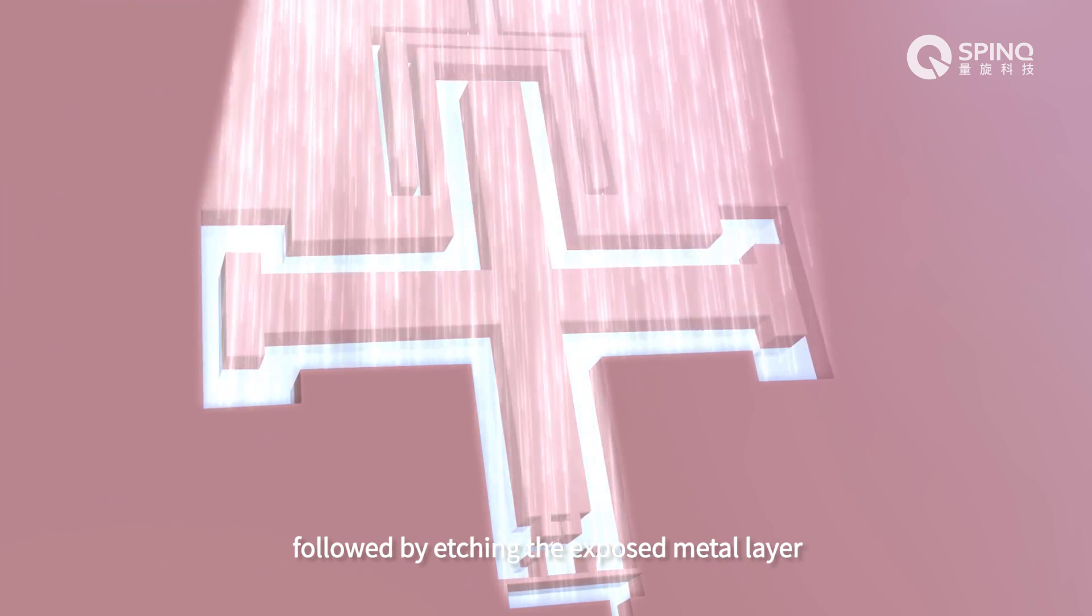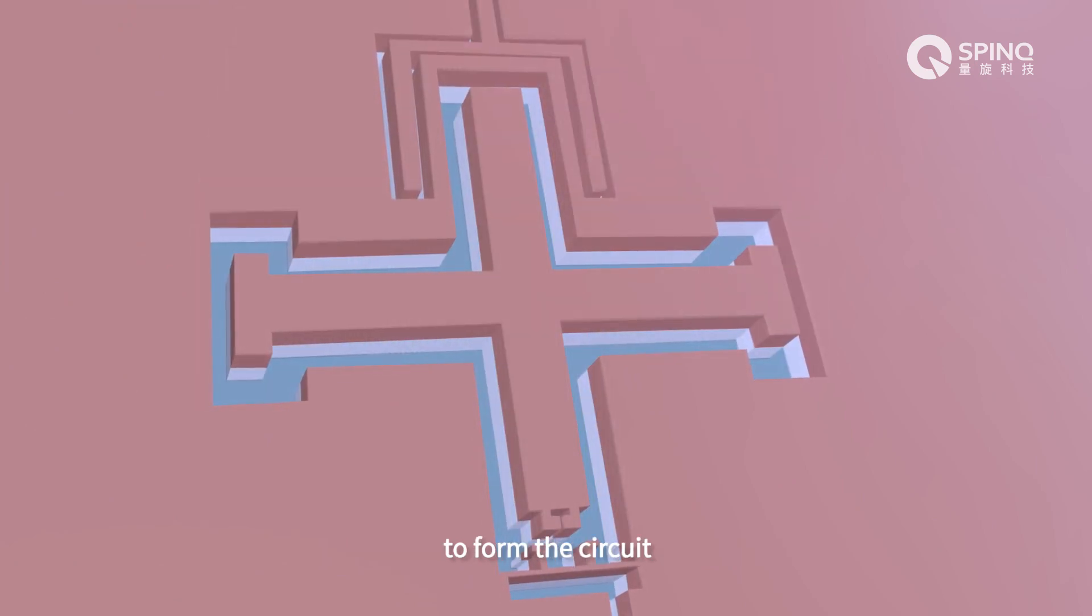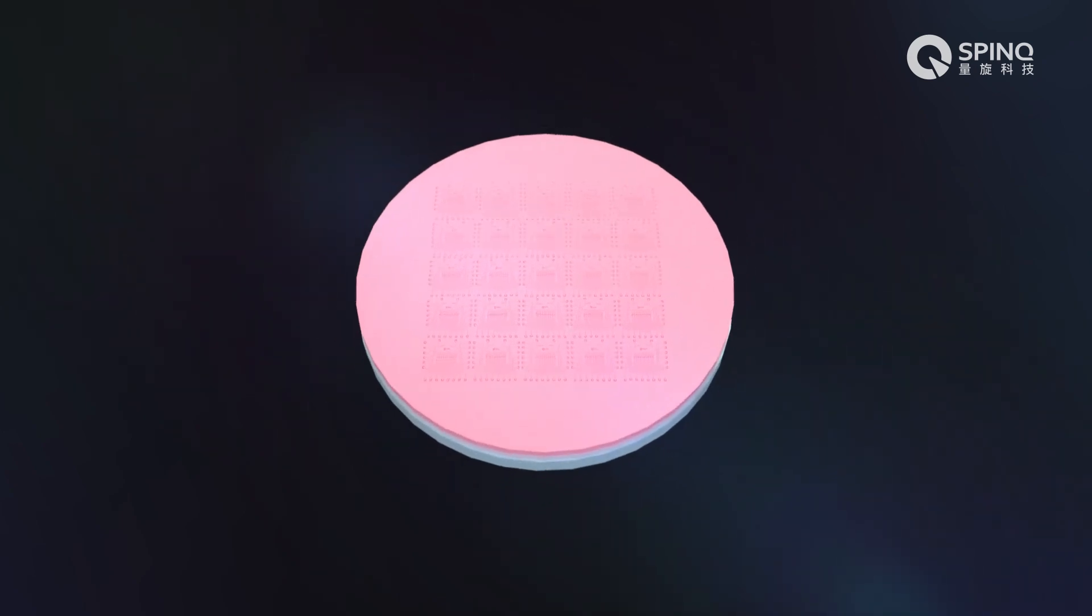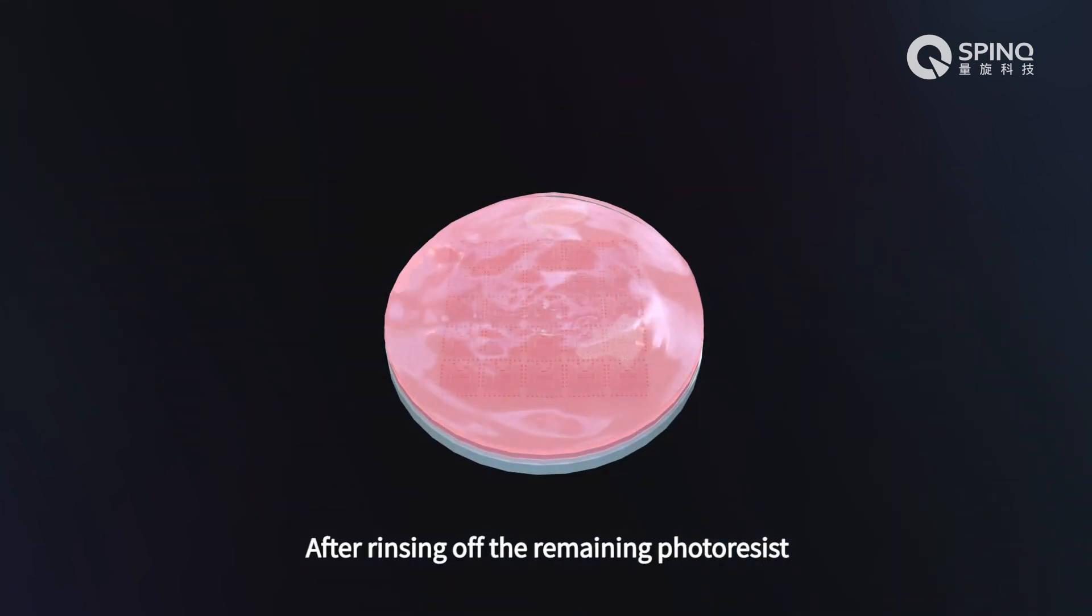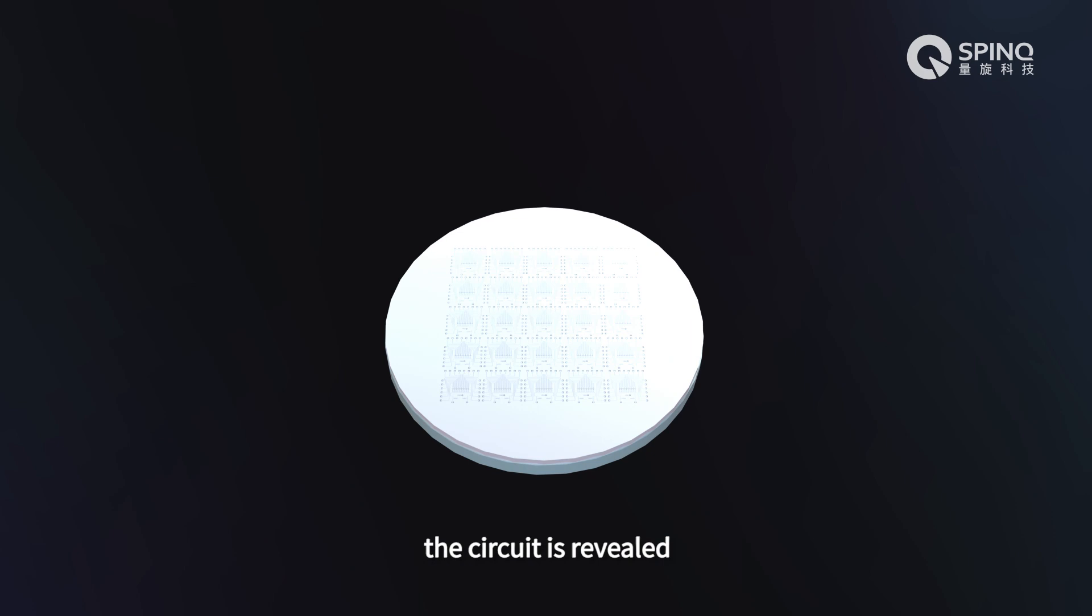Followed by etching the exposed metal layer to form the circuit. After rinsing off the remaining photoresist, the circuit is revealed.